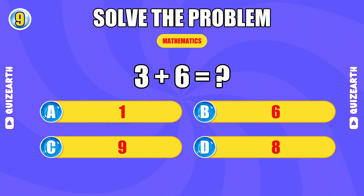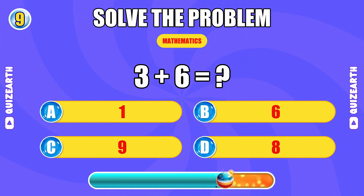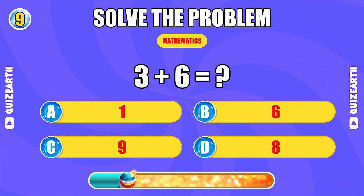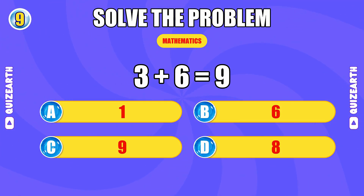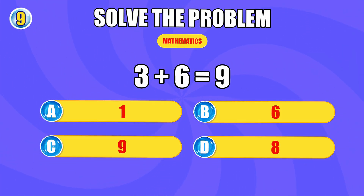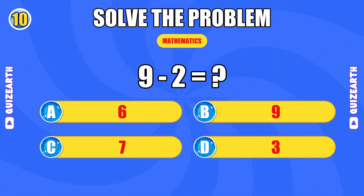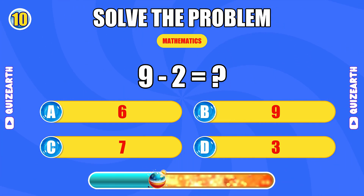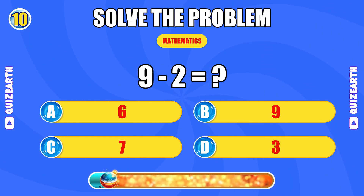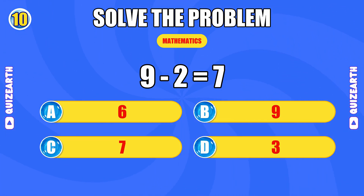What do you get when you add three and six? Too easy for you — the answer is nine. What is nine minus two? Impressive — the answer is seven.